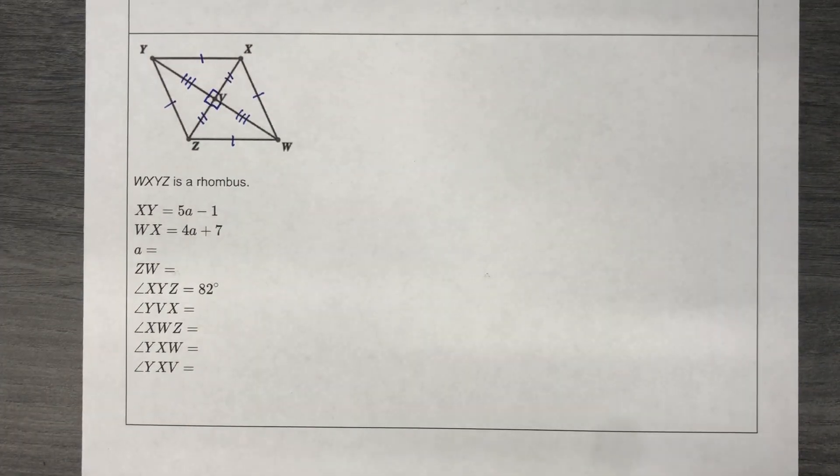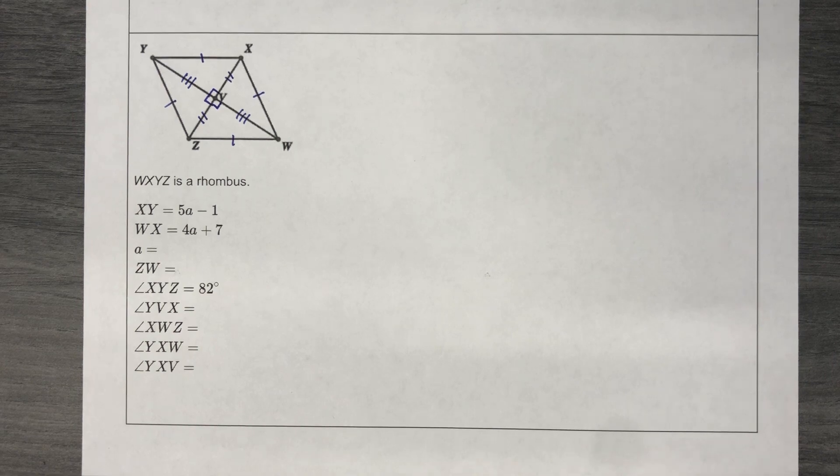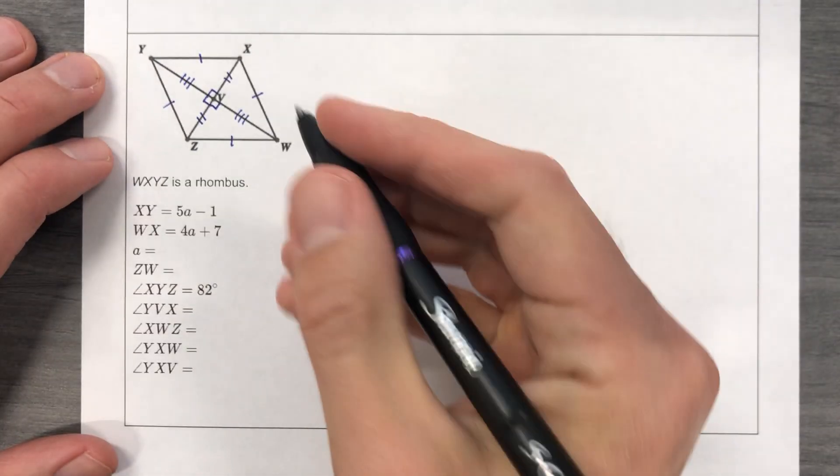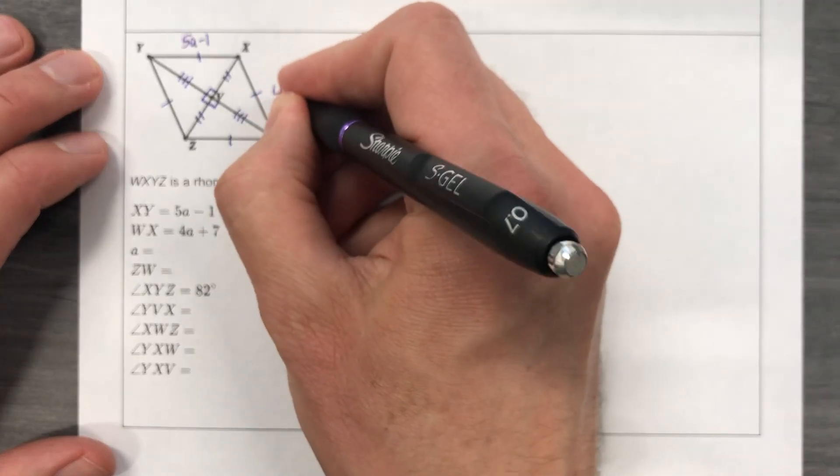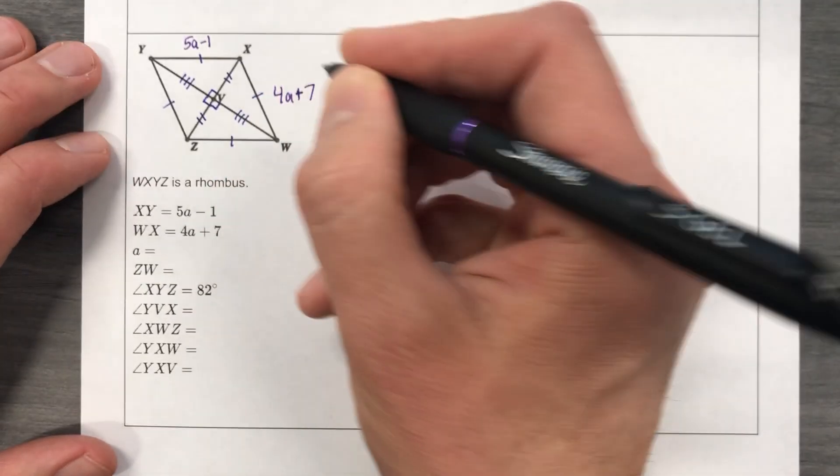All right, let's figure out some things. They told us, what color shall we use? Purple? Sounds good to me. If I can get this one to work. X-Y is 5A minus 1, and W-X is 4A plus 7. Okay, well, stop right there.